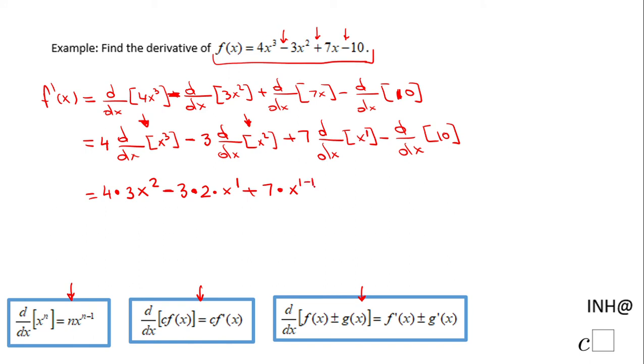Plus 7 times x, and here remember we have an invisible 1, 1 minus 1 power, and the last thing we have is a number. The derivative of a constant is 0.